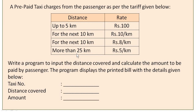For more than 25 km, the rate is Rs. 5 per km. So if you travel say 30 km, you subtract 25 km and multiply the remaining 5 km by 5, then add that to whatever values you got previously.